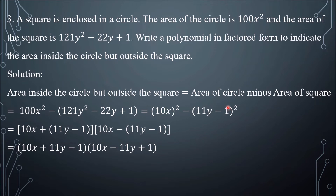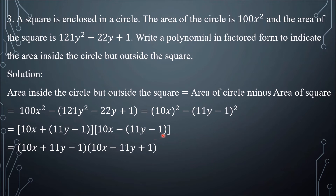The area of the circle is 100x squared; the area of the square is 121y squared minus 22y plus 1. As you notice, the square's area is a perfect square trinomial, so we can rewrite it. We have 100x squared as (10x) squared, and 121y squared minus 22y plus 1 as (11y minus 1) squared. So this is a difference of two squares, which we can factor into (10x plus 11y minus 1) times (10x minus (11y minus 1)).